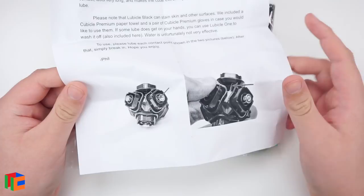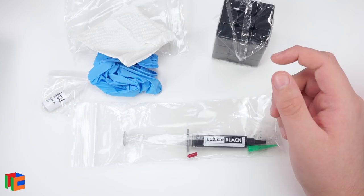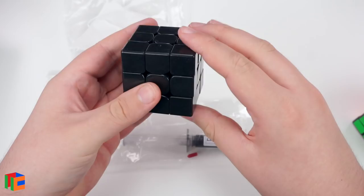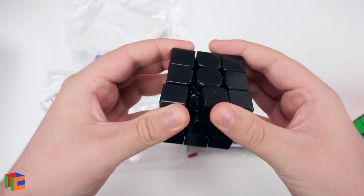These are the two spots. Let's go ahead and just try this out. We'll start with this completely bare GTS 2. This puzzle has absolutely no lubricant in it, and as you can see, it's really, really bad.